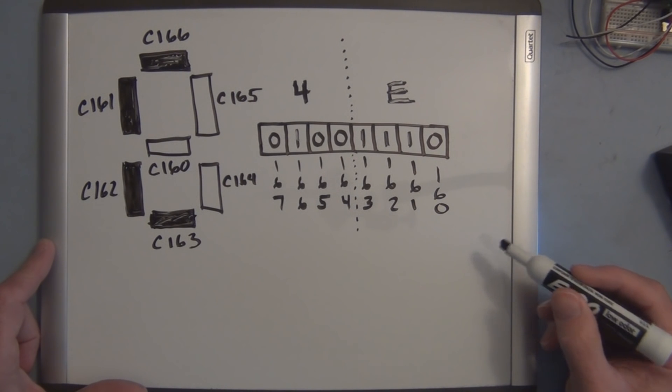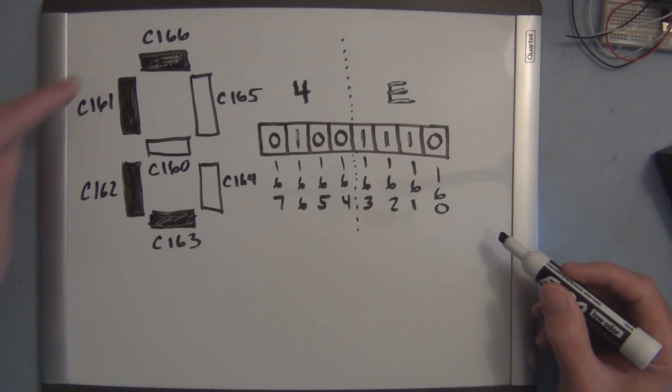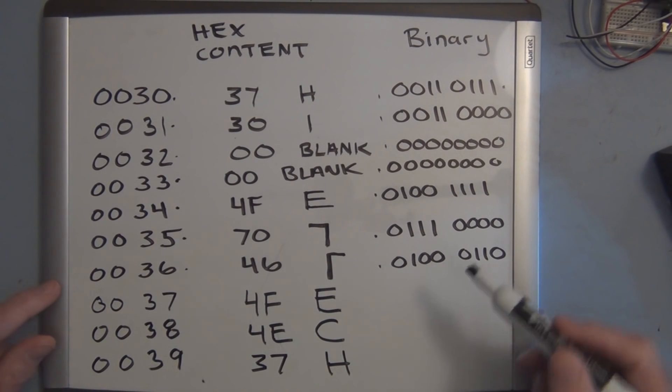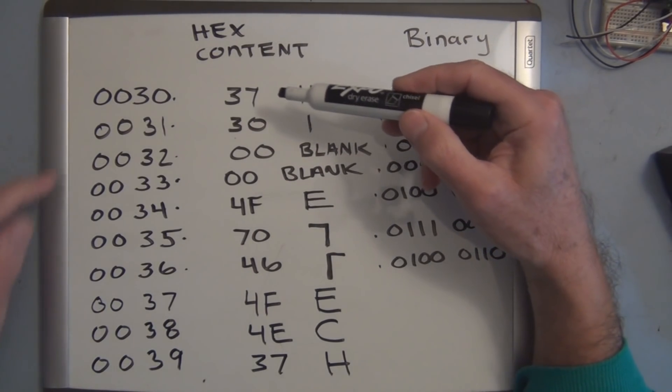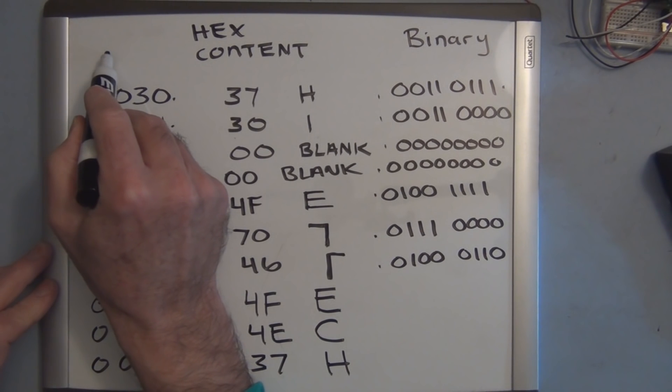So we enter in 4E into our program when we want to display the letter C. So here you can see a section of the program that I would have to enter in using the hexadecimal keypad. This is the address.